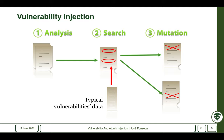By itself, the vulnerability injection component is used to inject realistic vulnerabilities in a system. This is useful to evaluate security mechanisms that search for vulnerabilities by computing the percentage of vulnerabilities they could find among all the vulnerabilities that were injected.